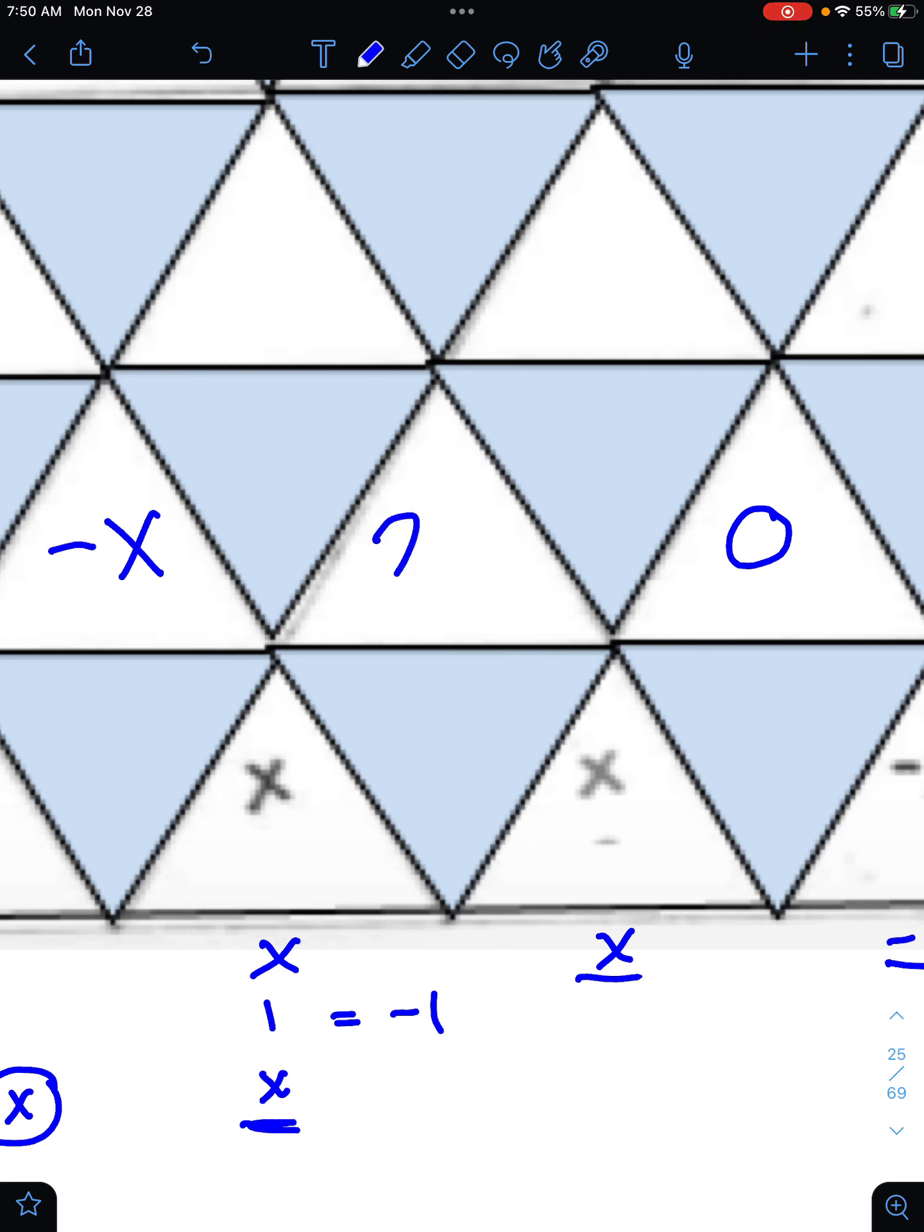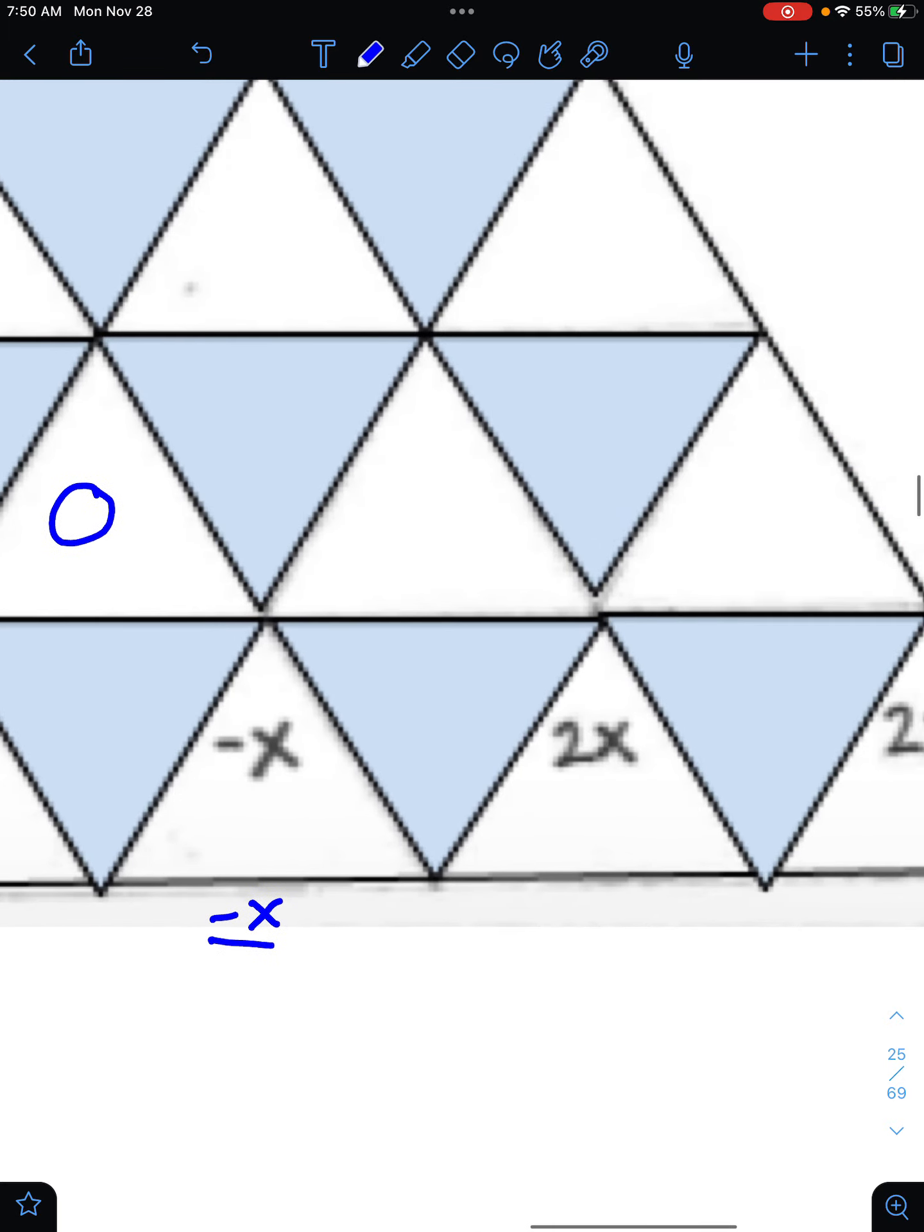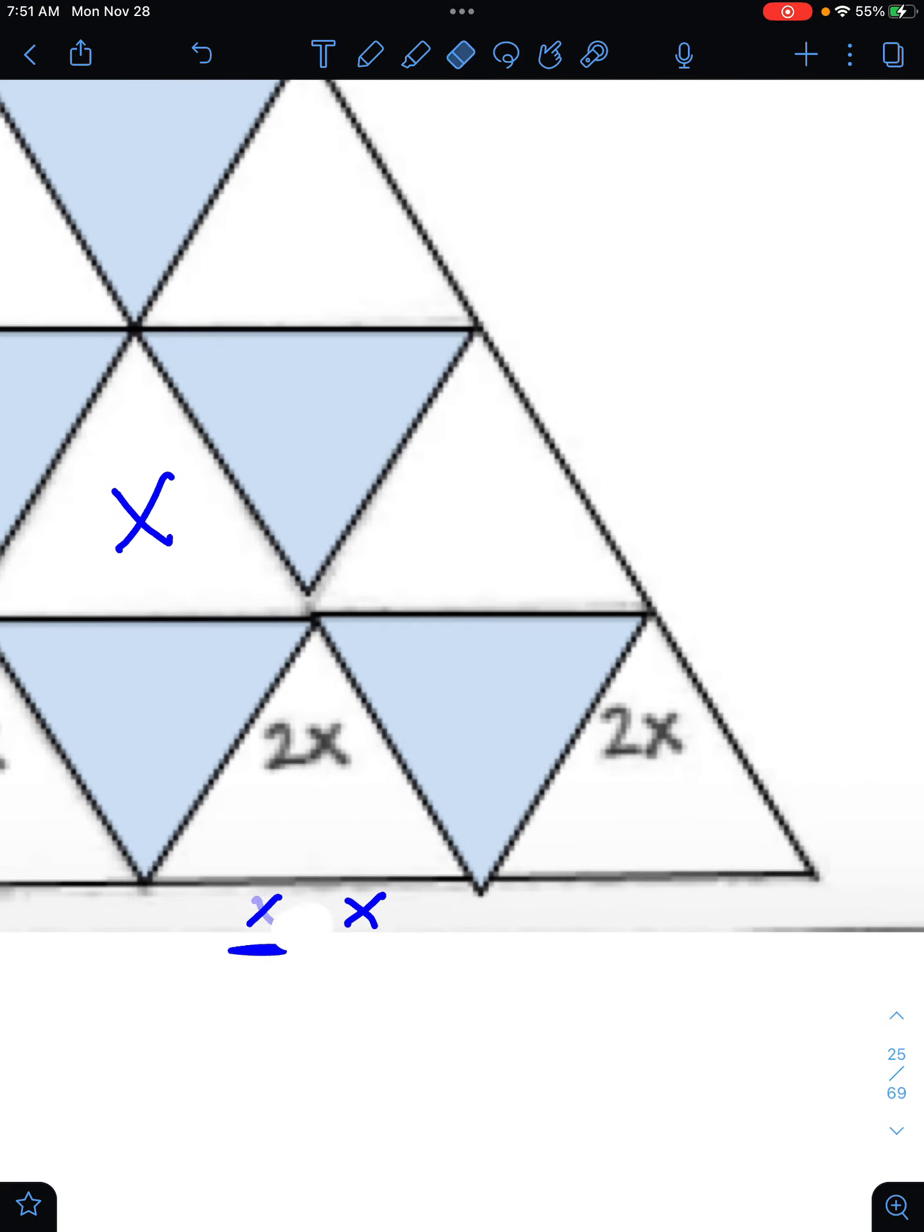x plus x is equal to 2x. This is like adding 1x plus 1x. So 1 plus 1 is 2. We've already done this one. This one is negative x plus 2x. You could think about it as negative x and positive 2x. We have two of them that cancel out. That leaves us with positive x. Then here, 2x plus 2x. You could think about it as x plus x plus x plus x. Or think about it as adding 2 plus 2, which is 4. Then stick the x on it. That's 4x.